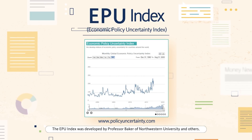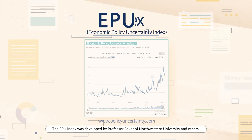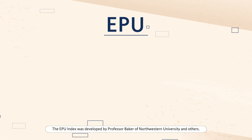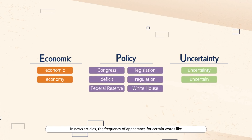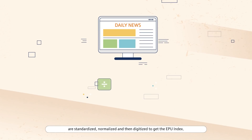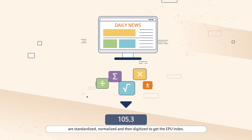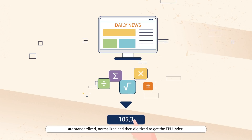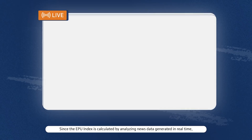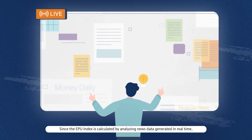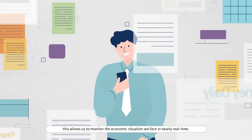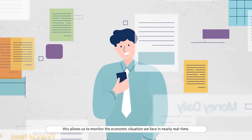The EPU Index was developed by Professor Baker of Northwestern University and others. In news articles, the frequency of appearance of certain words like economy, policy, and uncertainty are standardized, normalized, and then digitized to get the EPU Index. Since the EPU Index is calculated by analyzing news data generated in real time, this allows us to monitor the economic situation we face in nearly real time.